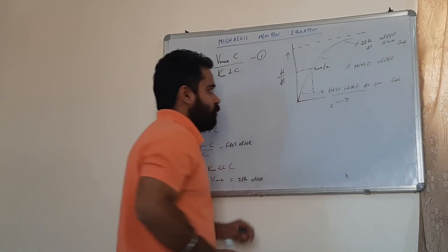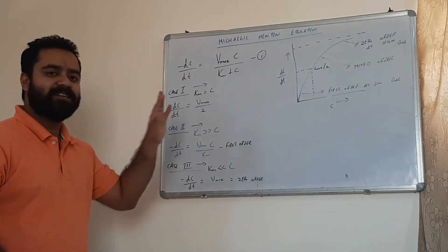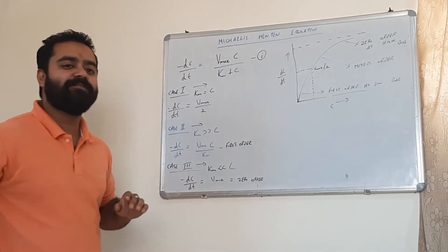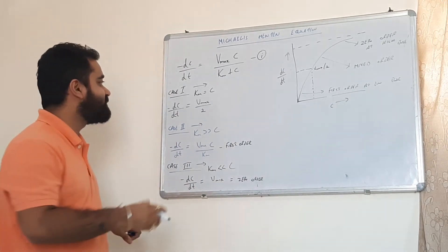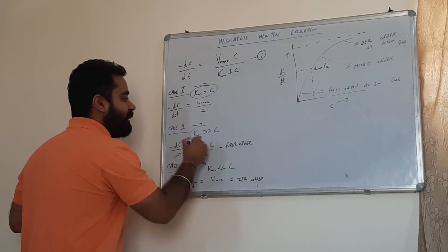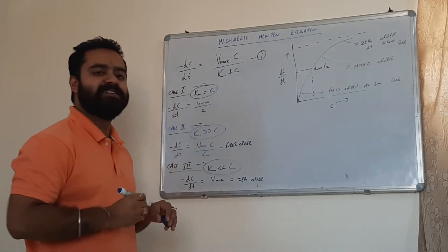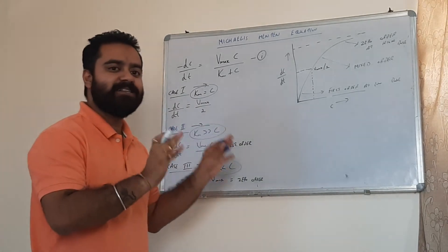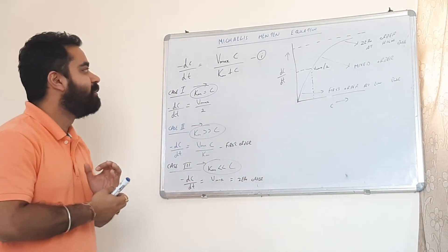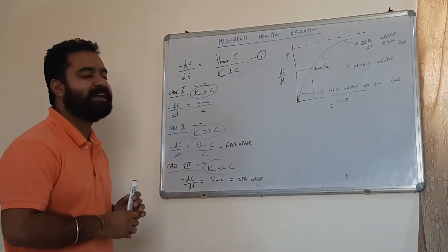This is the Michaelis-Menten equation applied to nonlinear pharmacokinetics, where we have three cases: Km equal to c, Km greater than c, and Km less than c. This readily represents the metabolism, excretion, and pharmacokinetics of the nonlinear case.